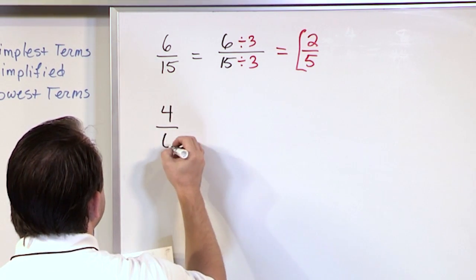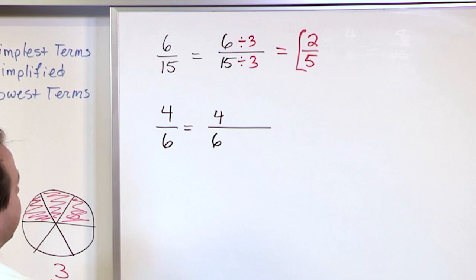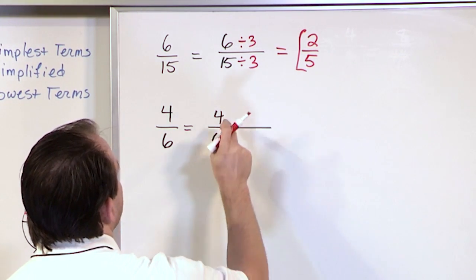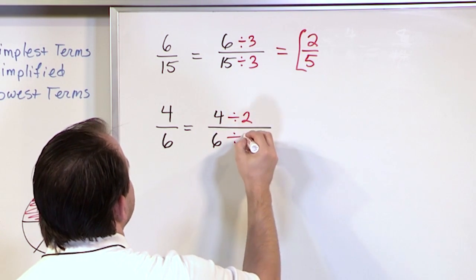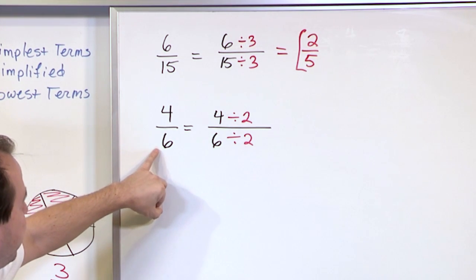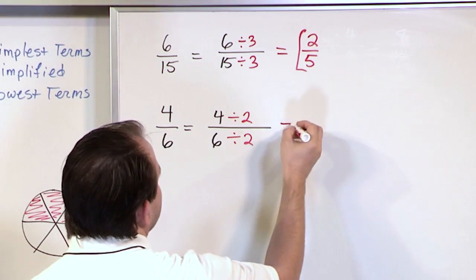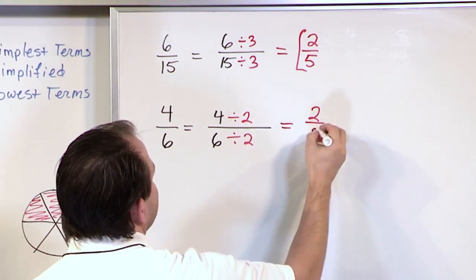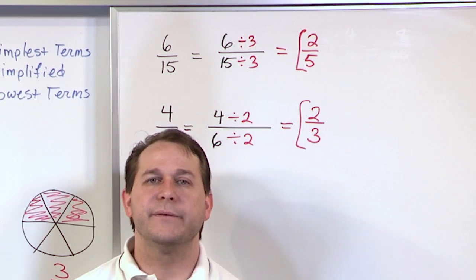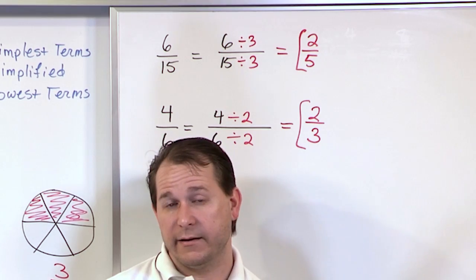Let's do the last example: 4 sixths. We ask what we can divide the top and bottom by to get a simpler fraction. We can divide by 2 on the top and 2 on the bottom. Note that 3 would not work — we could divide the bottom by 3 but not the top. So 2 is the only one that works: 4 divided by 2 is 2, and 6 divided by 2 is 3. Two thirds is the answer — simplified and in lowest terms.